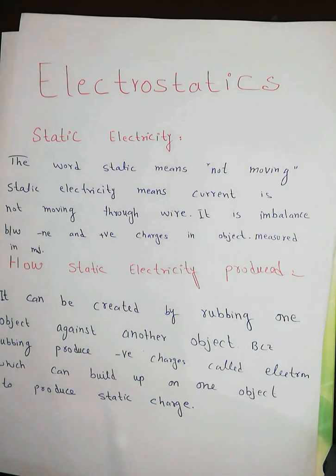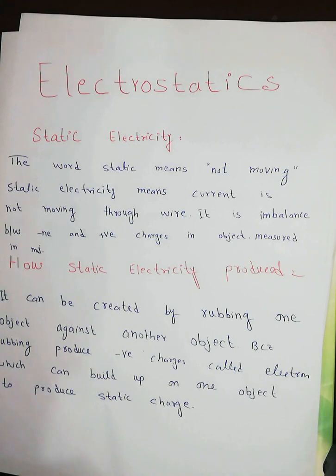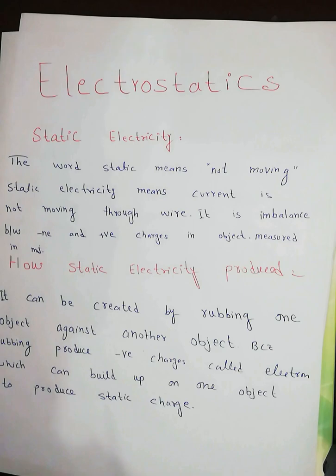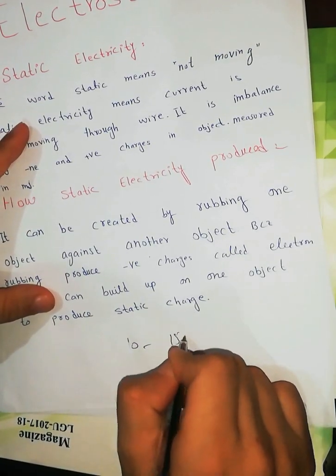In triboelectricity, energy and electricity are produced by friction. For example, charges produced by rubbing on a carpet — in this case, energy and static electricity are produced, which is around 10 to 15 millijoules.